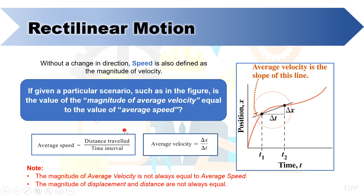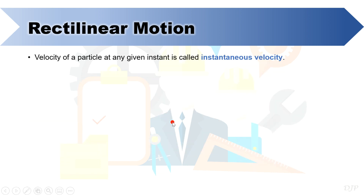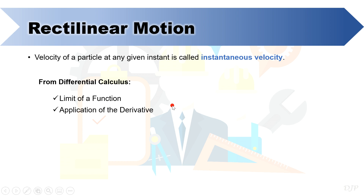How about finding the velocity of a particle or object at a specific time? To answer this question, let's tackle instantaneous velocity. Instantaneous velocity is the velocity of a particle at any given instant. If you can still remember from your differential calculus, this concept is similar to instantaneous rate of change, where you apply limits to get the slope at specific points in the curve. Consequently, you were introduced to the differentiation process, a mathematical technique that you can apply to a given equation of the curve, which will also allow you to get the slope at specific points.